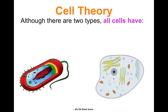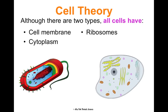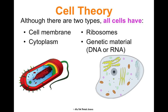All cells, regardless of whether they're prokaryotic or eukaryotic, have four things: a cell membrane, cytoplasm, ribosomes, and genetic material. The cell membrane is the green outer layer in the picture. Cytoplasm is the blue or gray fluid inside the cell. Ribosomes are the little dots floating around that make proteins. And genetic material floats freely in a prokaryotic cell, but is stored in the nucleus of a eukaryotic cell.